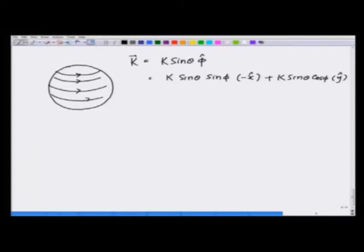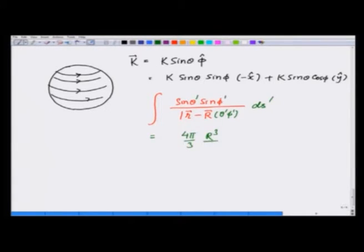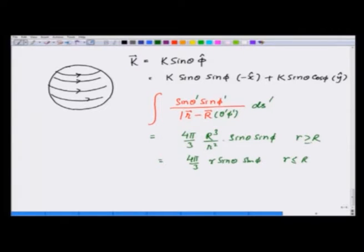We came across an integral like ∫ sinθ sinφ / |r - r'| ds', where r' is a function of θ' and φ'. I claim this equals 4π/3 · r³/r'² · sinθ sinφ for r greater than r', and equals 4π/3 · r · sinθ sinφ for r less than or equal to r', and likewise for the cosine term.